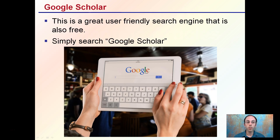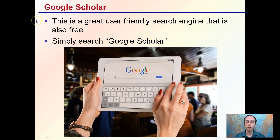First off, I suggest starting with Google Scholar. Go right into Google, type in Google Scholar, and then use that subset search engine. The reason why I like you starting with this is it's a great user-friendly search engine that's also free, and it gives a very powerful tool to at least find some of the articles that are out there.